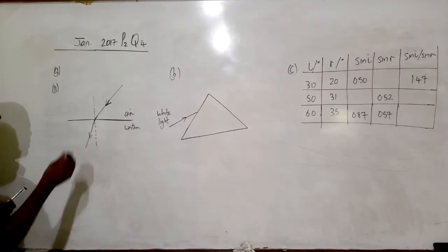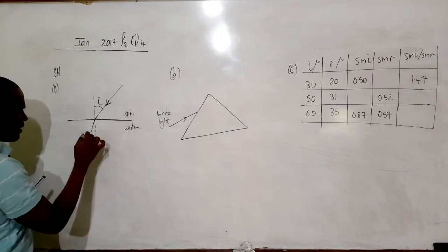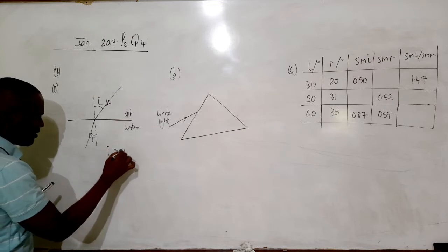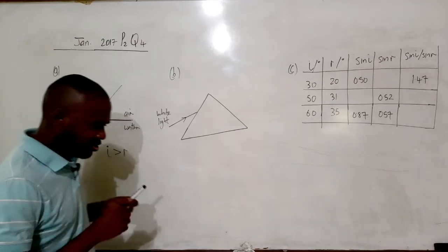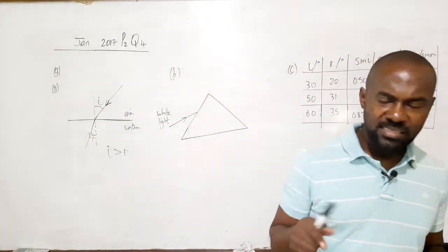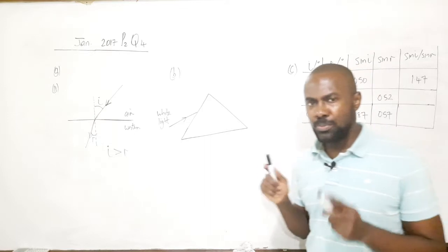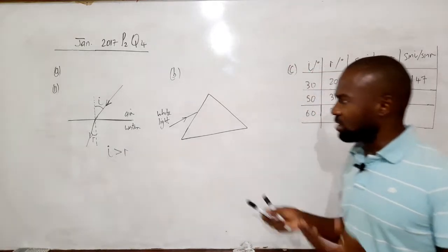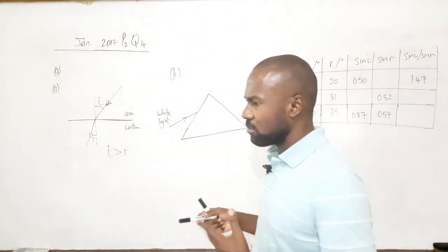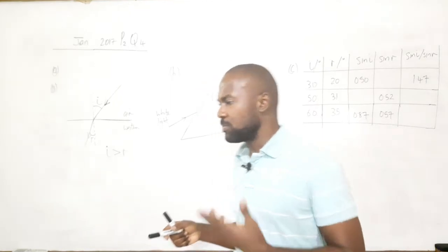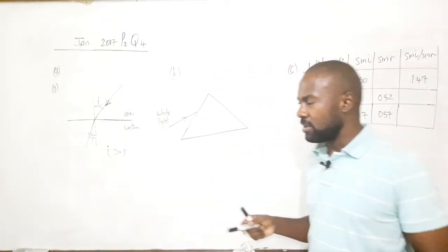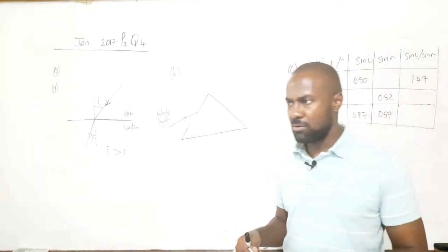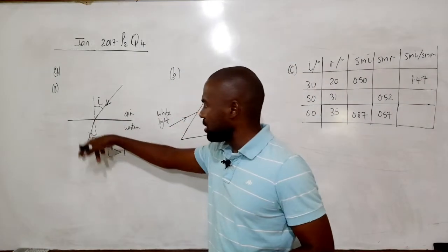When light goes from air into water, it is refracted towards the normal. The angle of incidence i is greater than the angle of refraction r. Generally, when light travels from a less dense medium into a denser medium, the speed decreases and it is refracted towards the normal. Water is much denser than air, so the speed of light decreases.